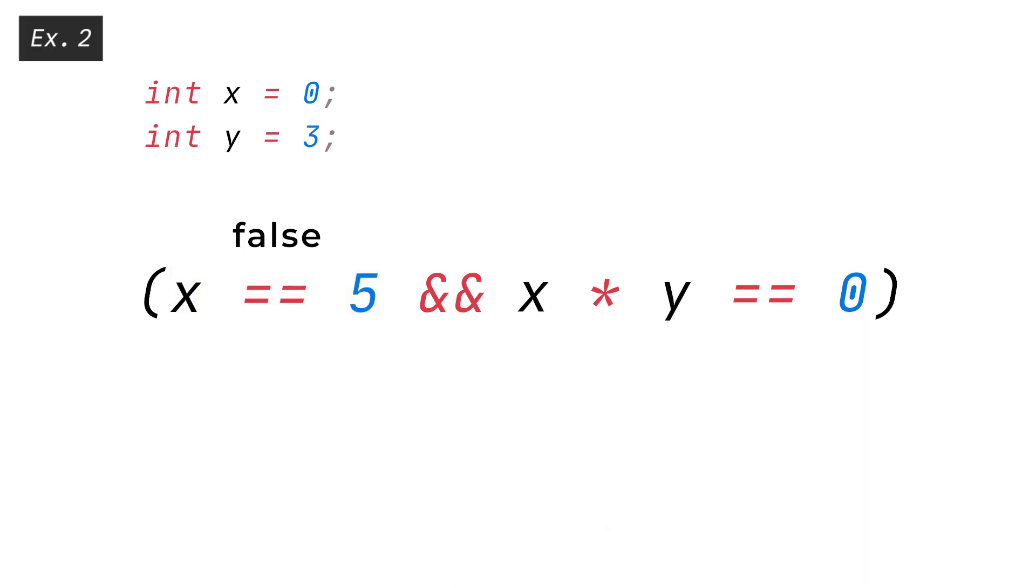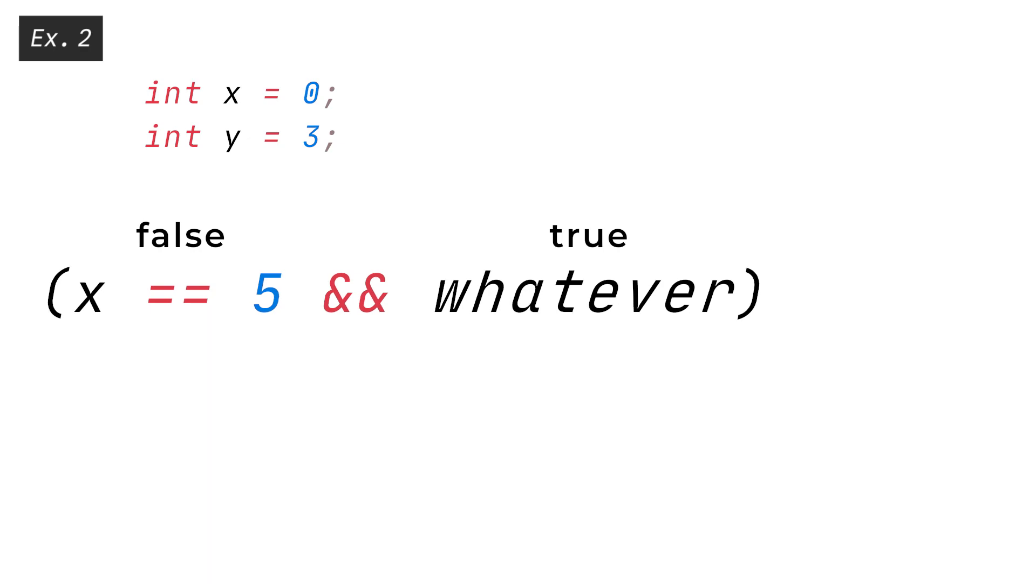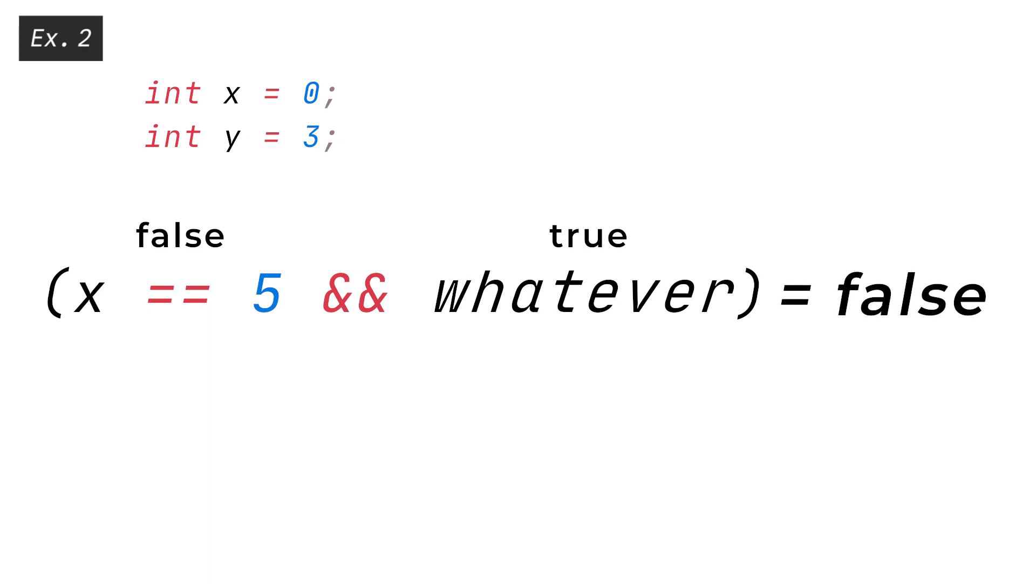Here the AND AND operator also short-circuits, because it realizes that the condition X equals equals 5 AND WHATEVER must be false, regardless of what the WHATEVER statement is. Even if WHATEVER is true, the whole condition will still return false. So we can generalize this behavior to say that false AND anything will always be false, and thus the right-hand side operand is NOT evaluated.